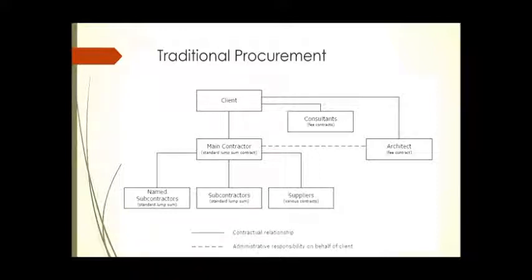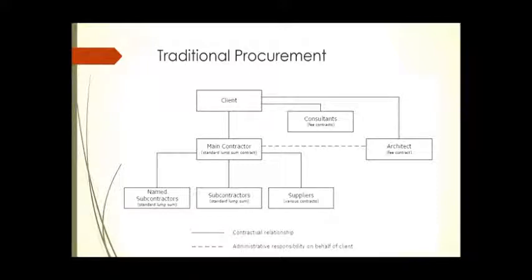The contractor usually cannot go beyond those named subcontractors unless there is a major case — such as they don't want to tender, they are busy, or there is prior history. There is also a third type: nominated subcontractors, where the client nominates subcontractors under the main contract. Under Australian Standard AS2124, you can nominate subcontractors, but under Australian Standard AS4000, you cannot nominate unless you use novation. These are the major relationships you need to understand.